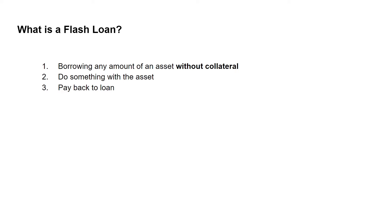Let's start off by explaining what exactly a flash loan is. I'll first go through it conceptually then use examples to explain in further detail. The first step is that I borrow any amount of an asset without collateral — meaning I can borrow up to millions of dollars worth of, say, Bitcoin without posting anything as collateral for the lender to hold. The second step is to do something with that asset. The last step is to pay back the loan.